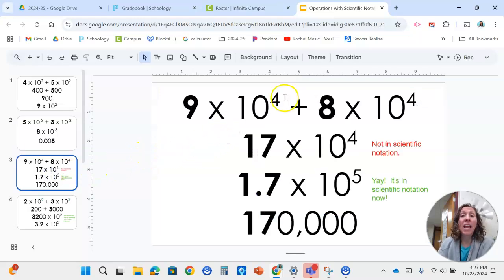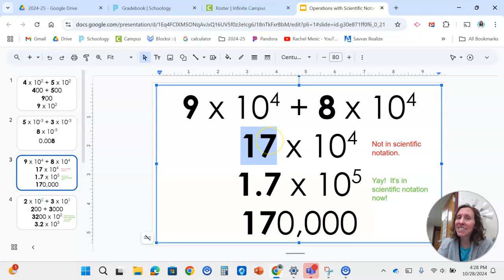For this one, we have the same exponent. So we're going to do 9 plus 8, which is 17. But that's not in scientific notation. We have to have a decimal after the first digit. So if we move the decimal this way, we're further to the left and would have to move the decimal five times to get to the same spot. So we're increasing the exponent by one. If we write that in standard form, we move the decimal five to the right and get 170,000.